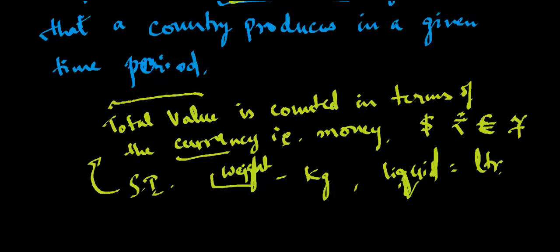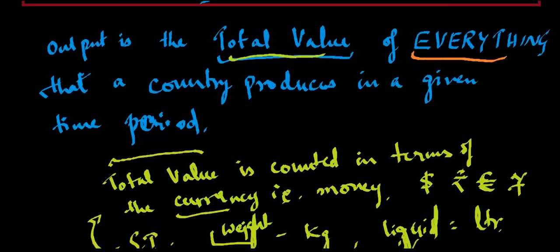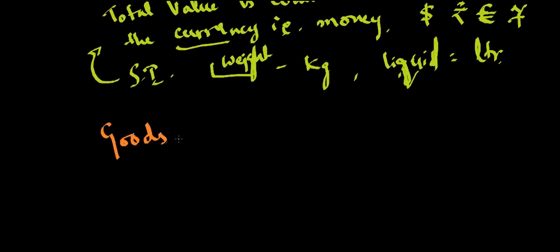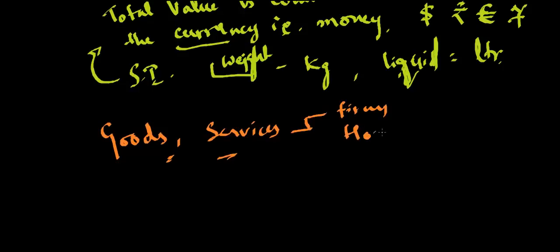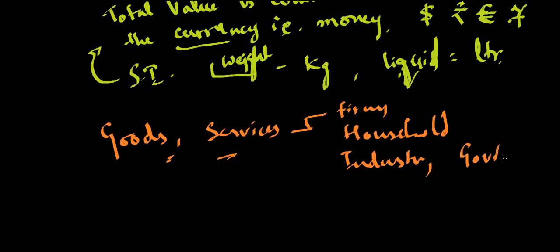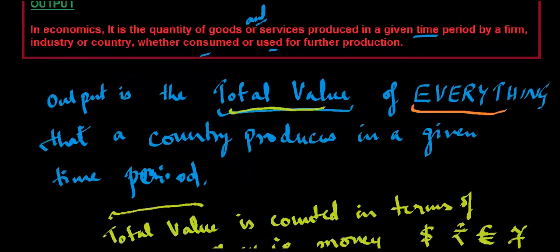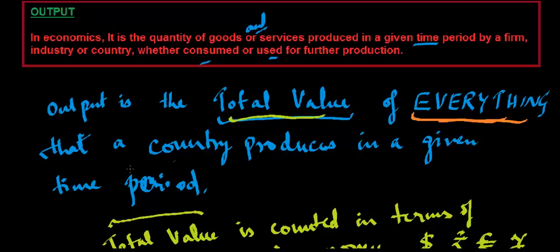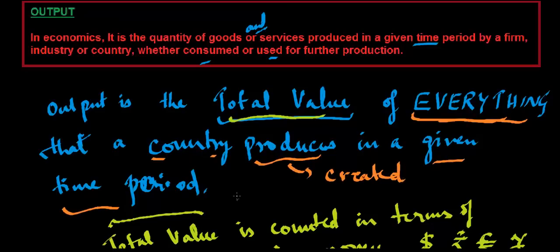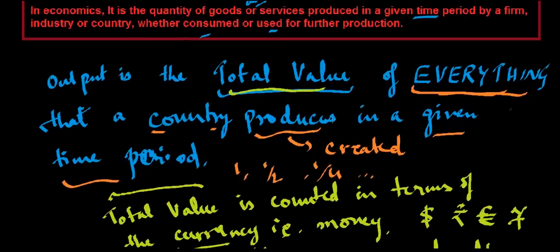Another thing in the definition is 'everything.' When we say everything, it includes goods and services — anything which has been made or created by anyone: firms, households, industries, government, or anyone inside or from the country. Everything that a country produces, created in a given time period, where the time period could be one year, half a year, or a quarter year. So, output is the total value of everything that a country produces in a given time period.